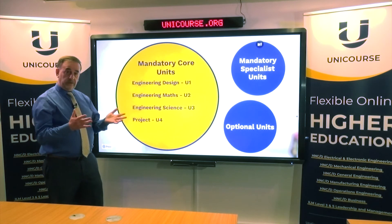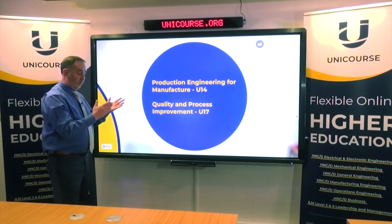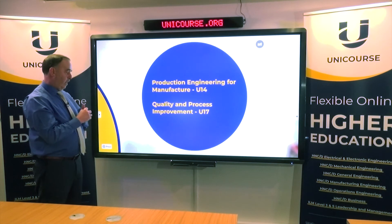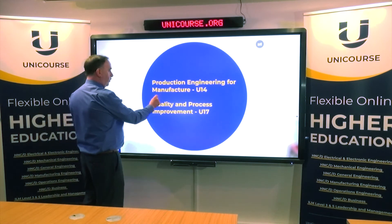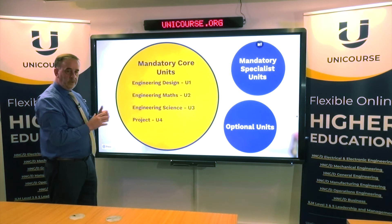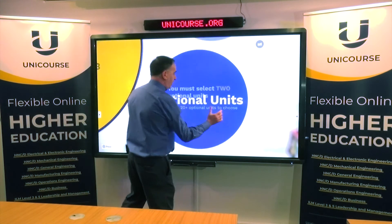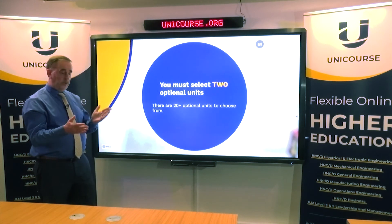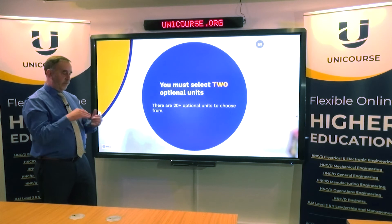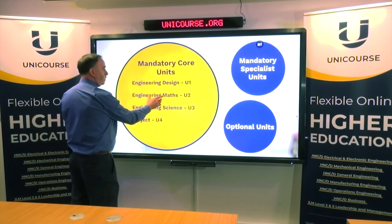You normally leave the project until the end, since you need foundational knowledge before you can produce a really good project. For this program there are also mandatory specialist units: production engineering for manufacture, and quality and process improvement. That gives you six units in total, and you still need another two to achieve the HNC, chosen from a large selection of 20+ optional units to tailor the program to your employer's needs or your own CV.